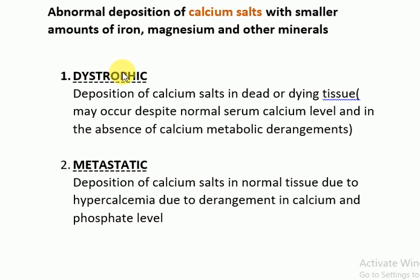In dystrophic calcification, deposition occurs in dying or dead tissue with a normal serum calcium level and no calcium metabolic derangement. In metastatic calcification, deposition occurs in normal healthy tissue due to hypercalcemia and derangement in calcium and phosphate levels.